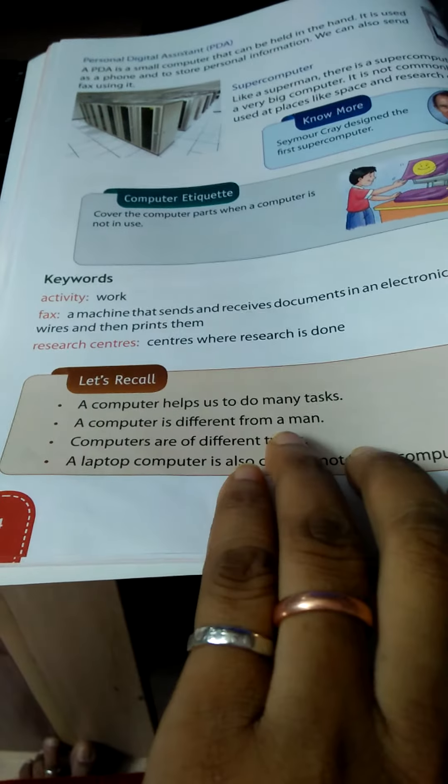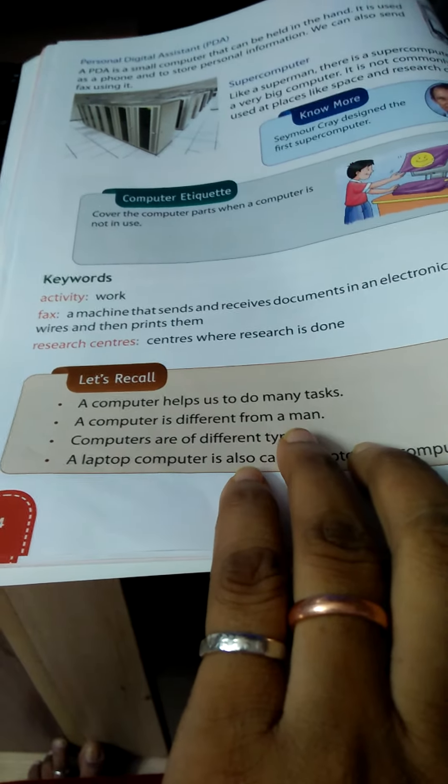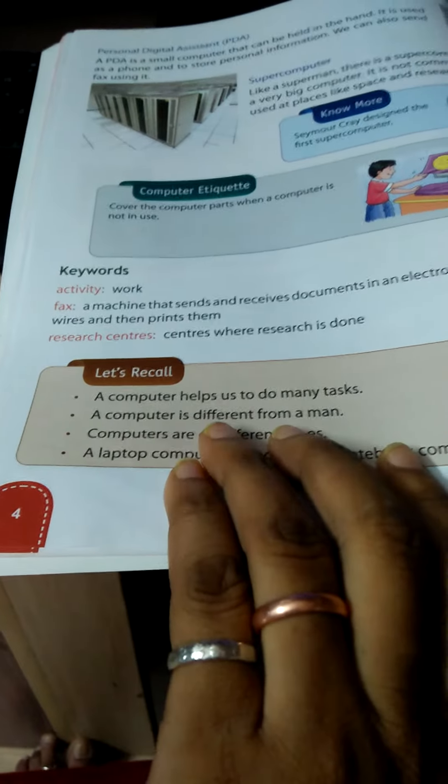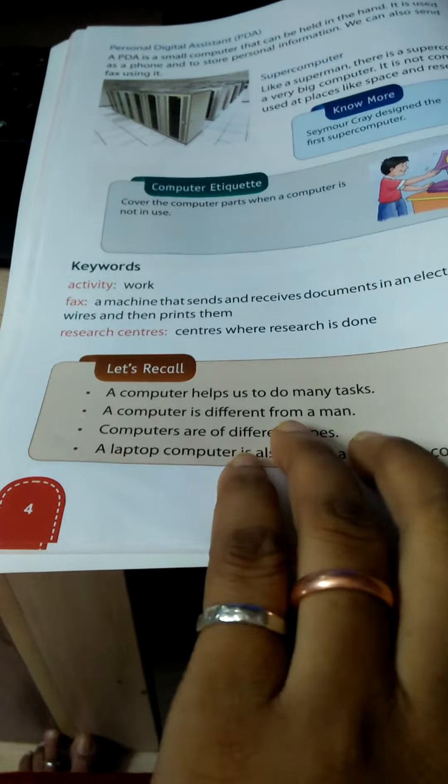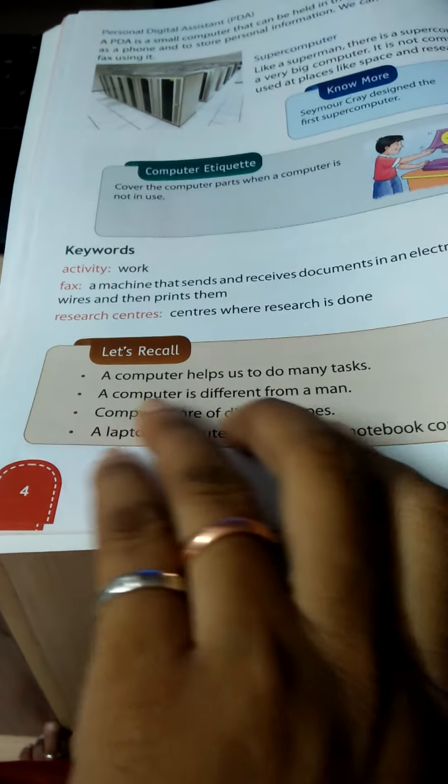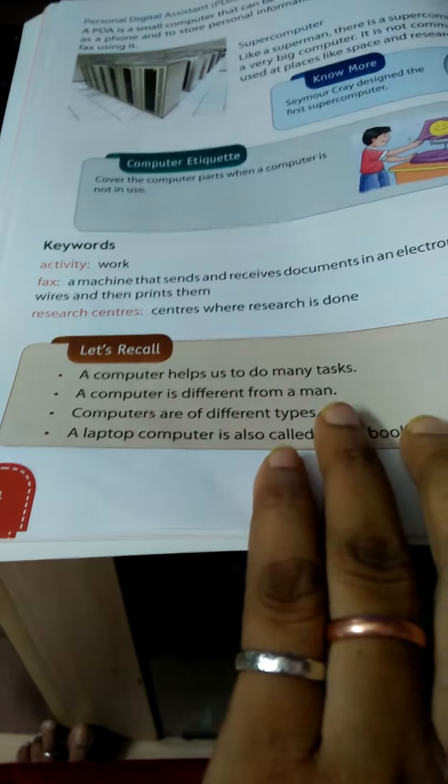A computer is different from a man. So how different is that? I have told you computer is always accurate. Computer never makes mistakes. Man makes mistakes. Computer haven't brain, a man has brain. This type of difference.